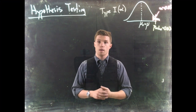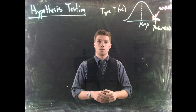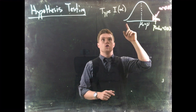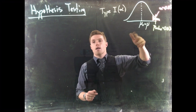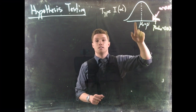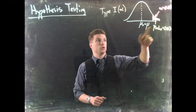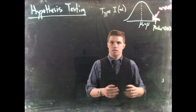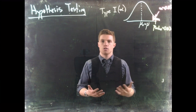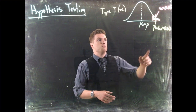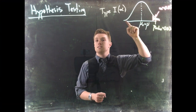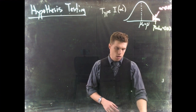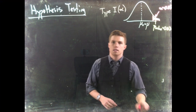We said we're willing to reject the null hypothesis and be wrong five percent of the time, so we reject it. But in this scenario the null hypothesis is actually true — we just got a rare sample. A Type 1 error is when the null hypothesis is actually true and we've rejected it anyway.